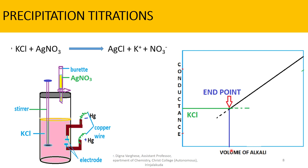There are other precipitation titrations that can also be followed similarly. Since the variation of conductance depends upon the particular reaction involved, no generalized plots can be given for precipitation titrations. This titration curve is only for the potassium chloride-silver nitrate titration.